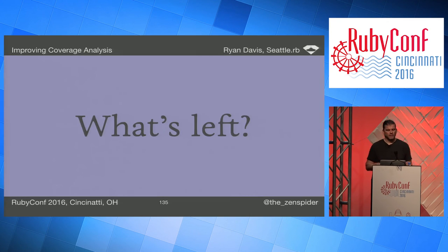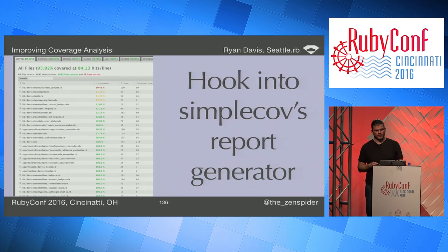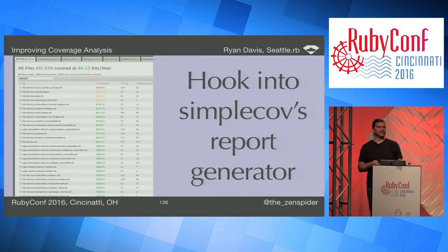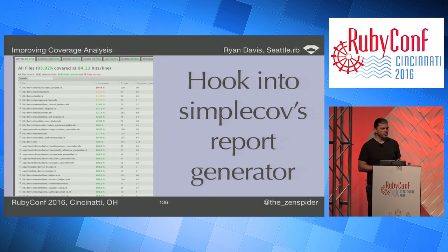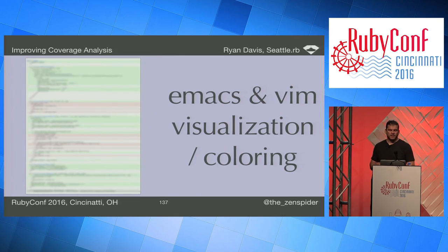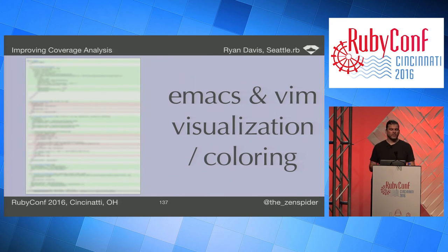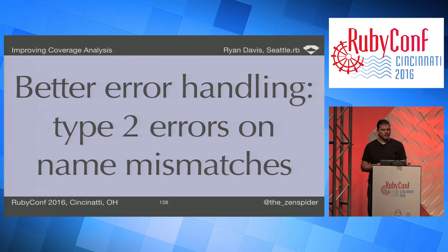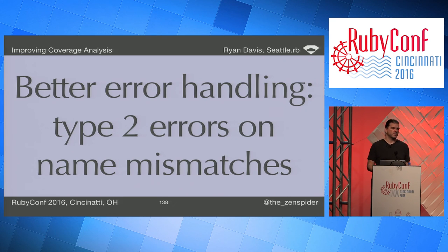What's left? I just released it, so what's next: I want to hook into SimpleCov's HTML reporter because it's pretty, and possibly their file format to integrate with tools like Code Climate. I want to improve live coverage in your editor — I'm essentially done with Emacs but could use help with Vim and other editors. I want better error handling for Type 2 errors — either more smarts to avoid them, or better reporting and suggestions so beginner users can quickly rename files or class names so they map properly.